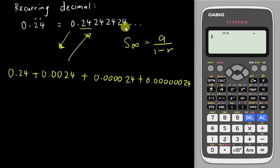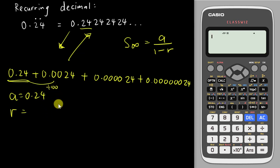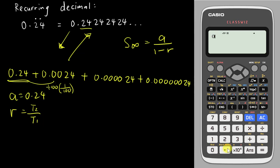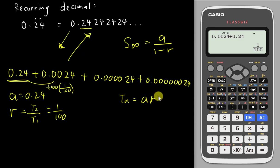From this pattern, the first term 'a' is 0.24. The common ratio 'r' is found by dividing the second term by the first: 0.0024 divided by 0.24 gives 1 over 100. So r equals 1/100. Now use the GP nth term formula: a times r to the power (n minus 1), substituting a as 0.24 and r as 1/100, with 'n' replaced by x.